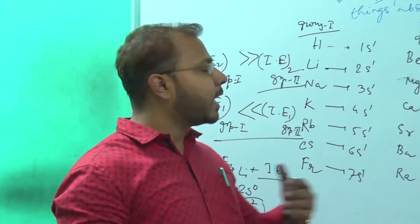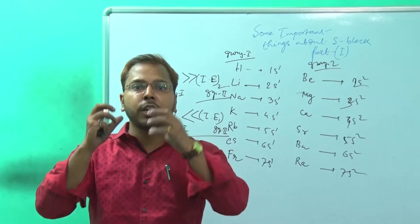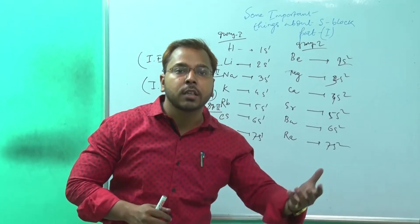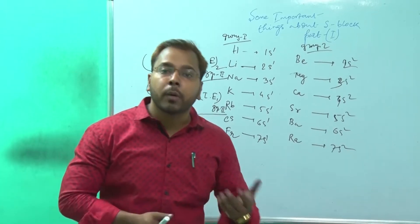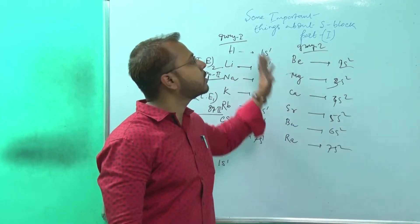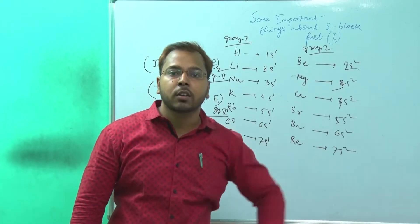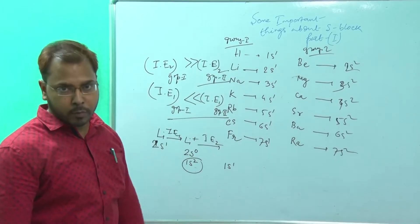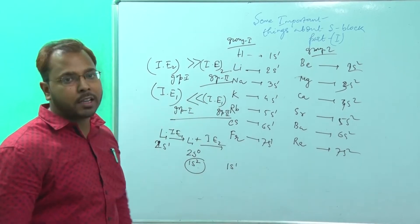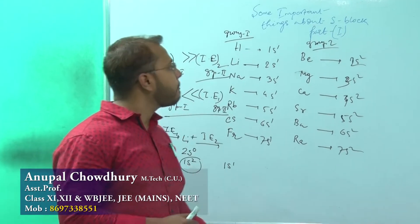Regarding metallic property: as we move down a group, the distance between the nucleus and valence electrons increases, so elements have a greater tendency to lose electrons, giving them good metallic property. Group 1 elements are stronger metals than Group 2 because they need to lose only one electron to achieve the nearest noble gas configuration. Alkali metals are also used in photoelectric and photovoltaic cells.